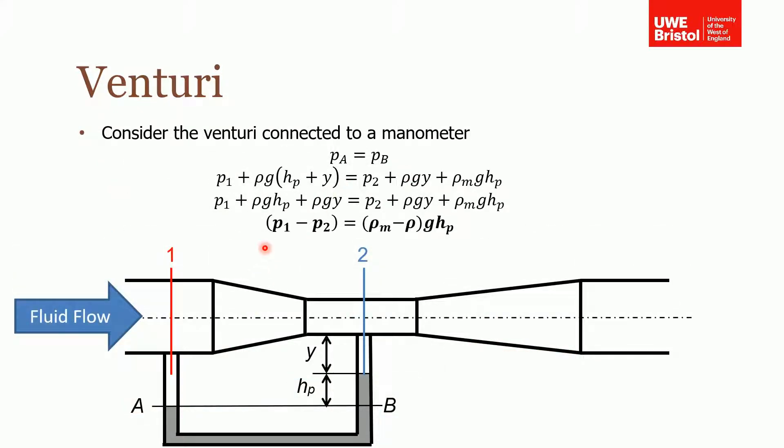Okay, so let's consider this venturi, and we're considering two planes. One which is the inlet at the inlet diameter, and two which is at the throat. Now if we want to work out the pressure difference, which you'll see that we need later on, we need to know this pressure difference to enable us to work out the velocity, the relative velocity between one and two. And so we connect up this manometer.